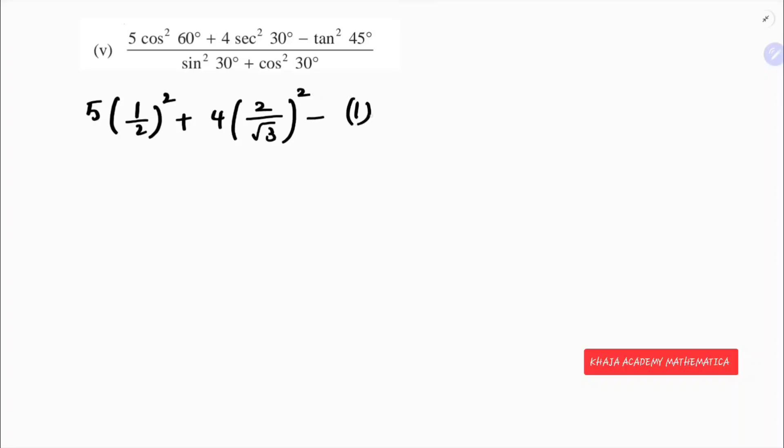Tan 45 is 1, so 1 squared. By sin 30 which is 1 by 2, whole squared. And cos 30 is root 3 by 2, whole squared. So cos 60 is 1 by 2, sec 30 value is 2 by root 3, tan 45 is 1, sin 30 is 1 by 2, and cos 30 is root 3 by 2. Now if I simplify this...